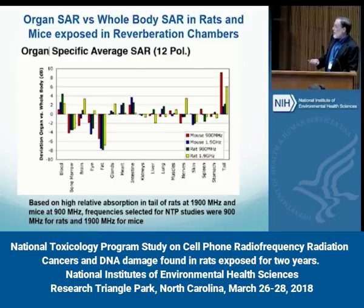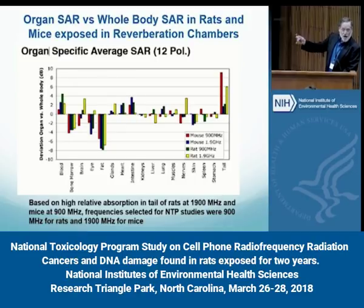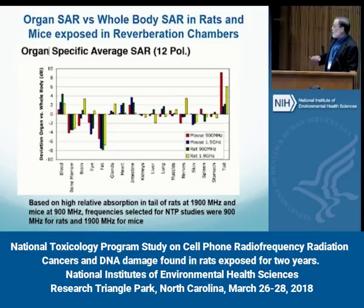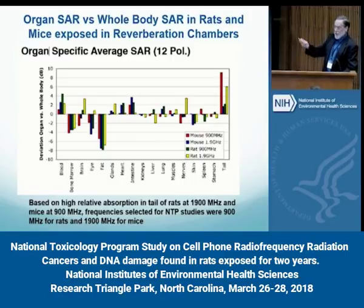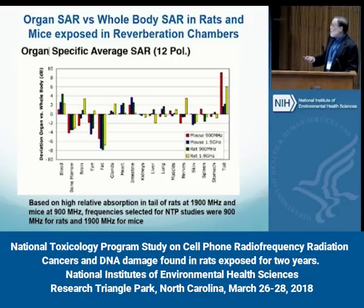At that time we were looking at a minimally different SAR in the brain compared to the whole body. Fat absorption is low, and other organs vary. So when you expose the whole body, we're not going to get a straight line across all tissues, but the particular organ we wanted the most emphasis on was the brain and not the tail.